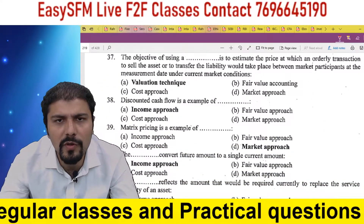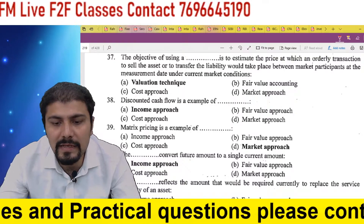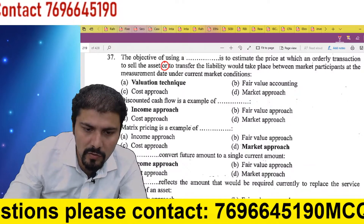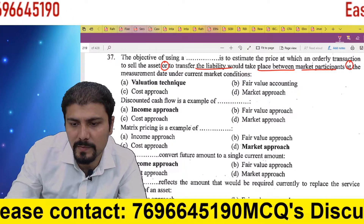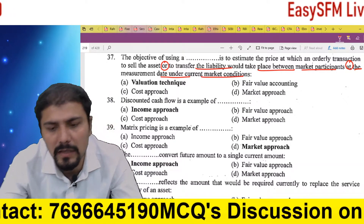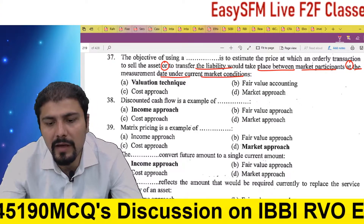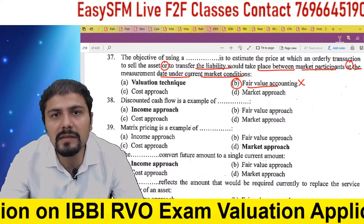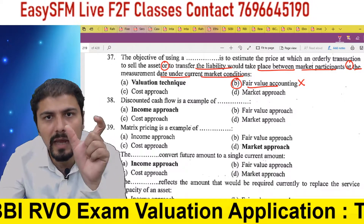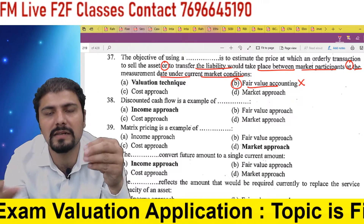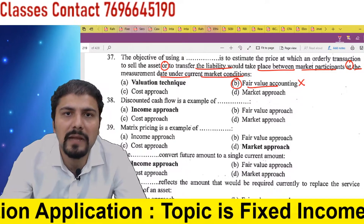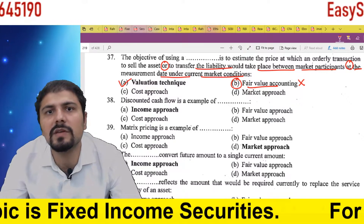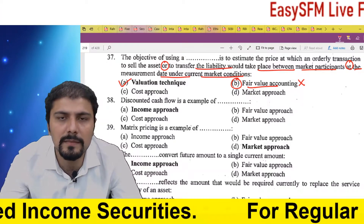The objective of using a valuation technique is to estimate the price at which an orderly transaction to sell the asset or to transfer a liability would take place between market participants at the measurement date under current market conditions. What is the objective of fair value accounting? Sometimes we think it means something else — that is not correct. Once valuation technique gives us a value, then comes recording of value, and for recording of value comes fair value accounting.